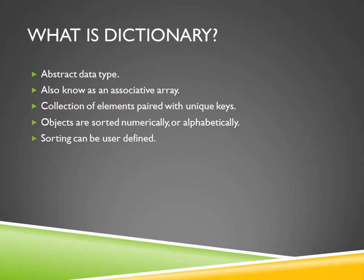So what is a dictionary? A dictionary is an abstract data type. Other names for a dictionary may be associative arrays or maps. Basically a dictionary is a collection of paired keys and elements which allow the user to find the pairs in a collection. Finding an element is relatively easy because the elements in the dictionary are assumed to be sorted either alphabetically, numerically, or by some sort of user-defined scheme.